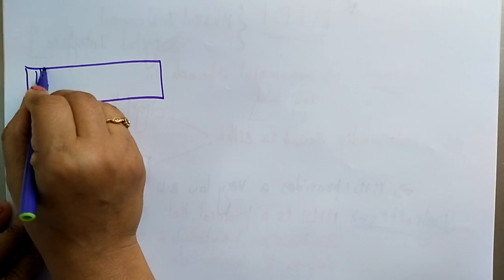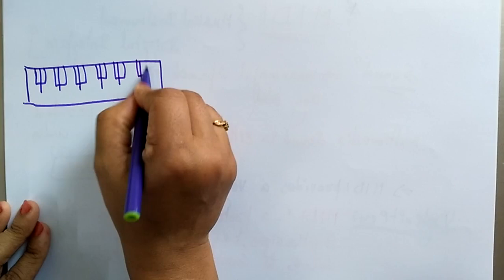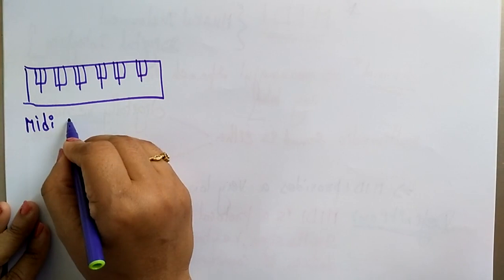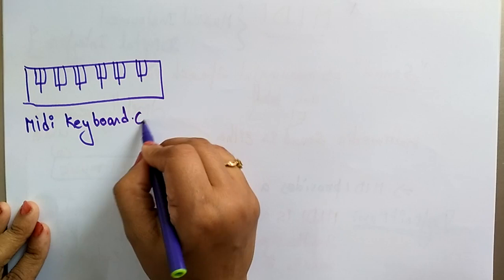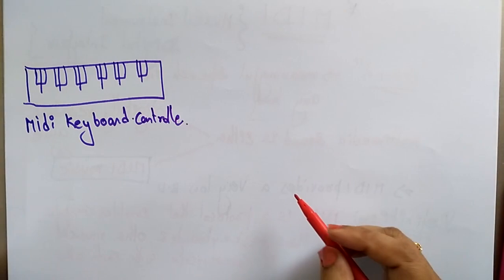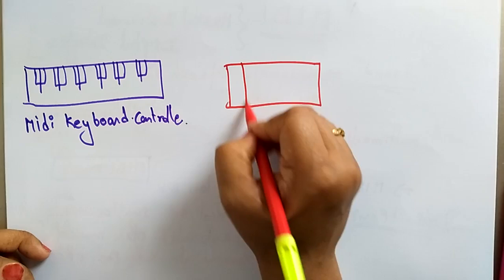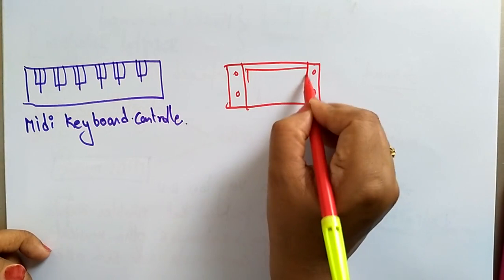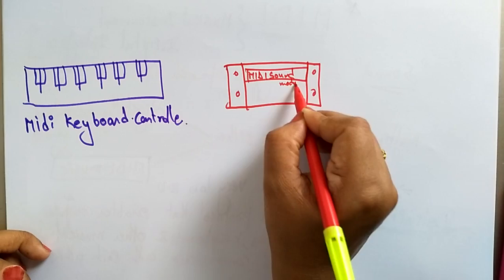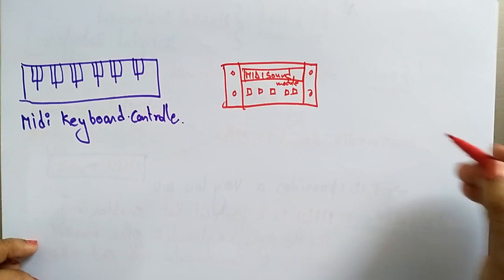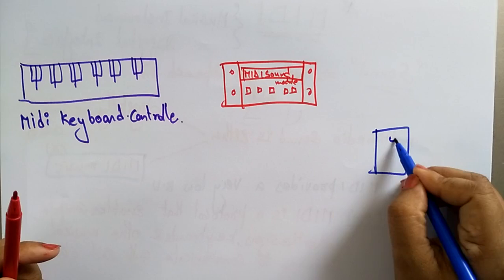Let me explain this definition using a diagram. We have a MIDI keyboard controller, a MIDI sound module, and some speakers.